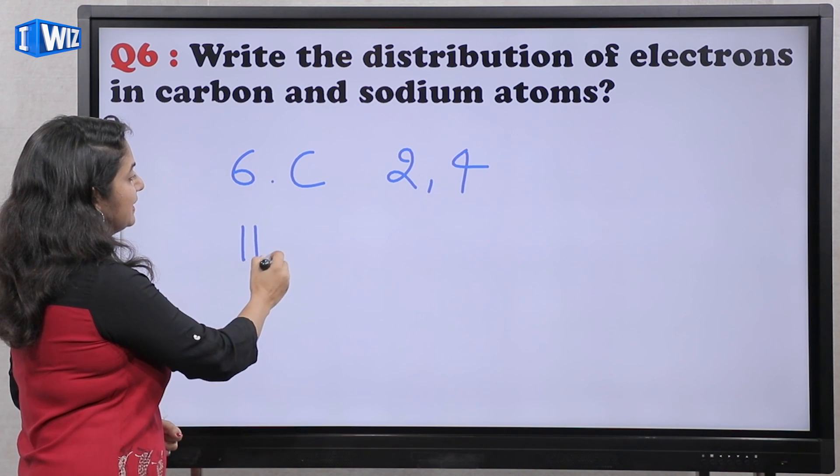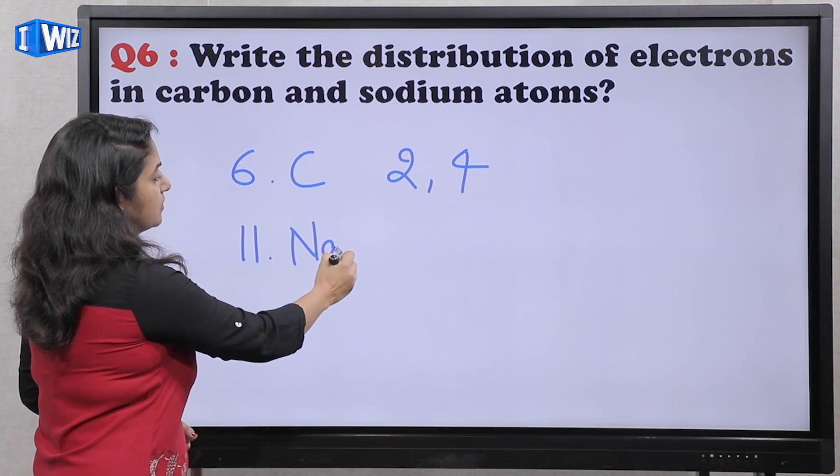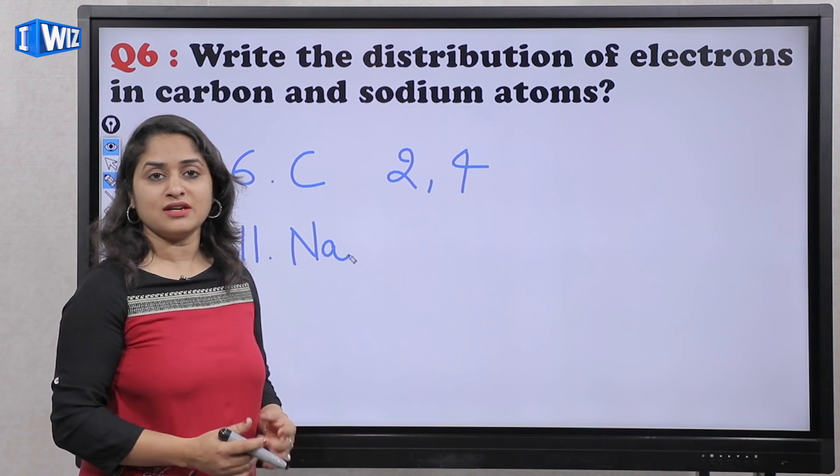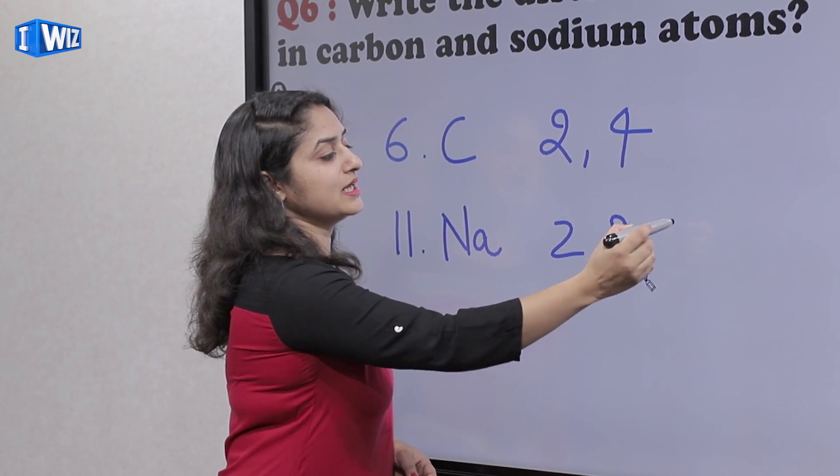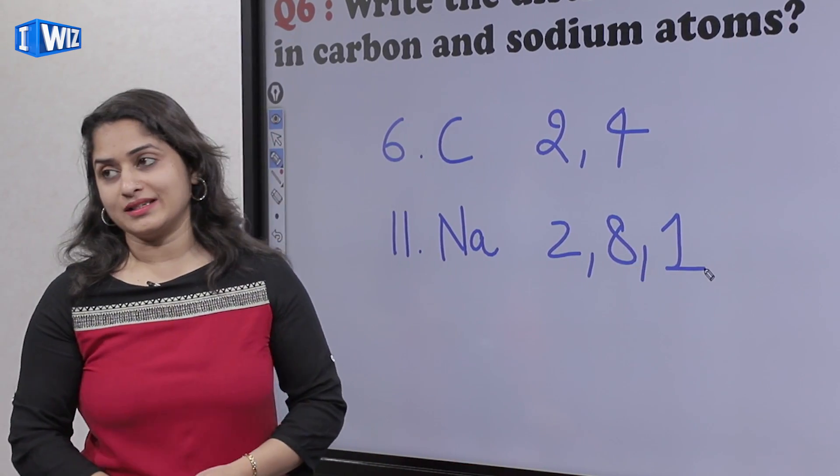And sodium, sodium ka atomic number hai 11. Toh isme three shells present hoiti hai. First shell mein hoongi two electrons, second shell mein hoongi eight, and third shell mein hoongi one electron.